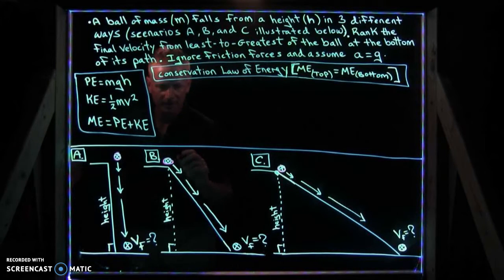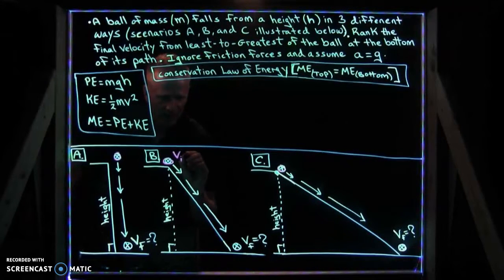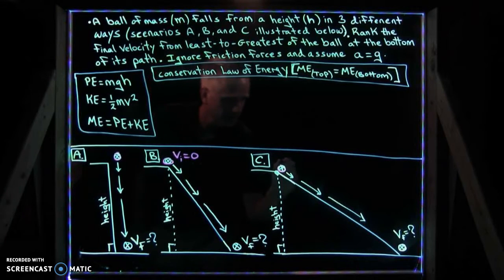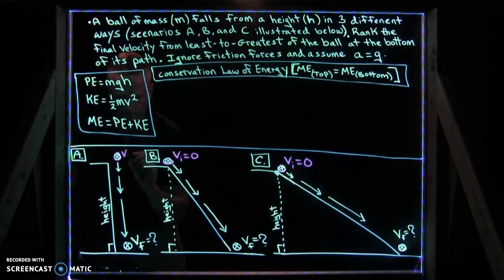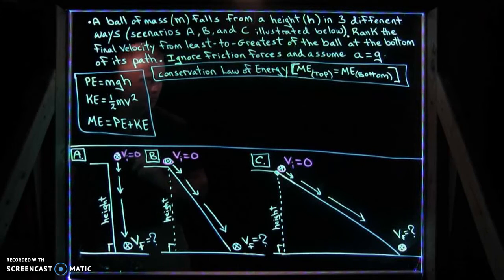Now you can always assume that when it falls, the initial velocity is zero. So if it has an initial velocity of zero in every case, how would you determine the final velocity?